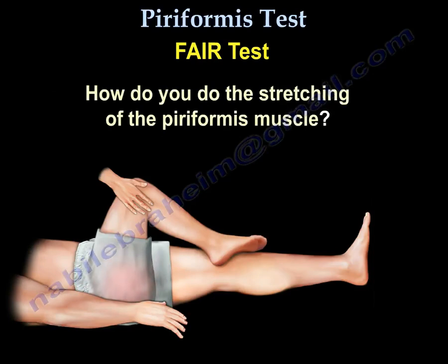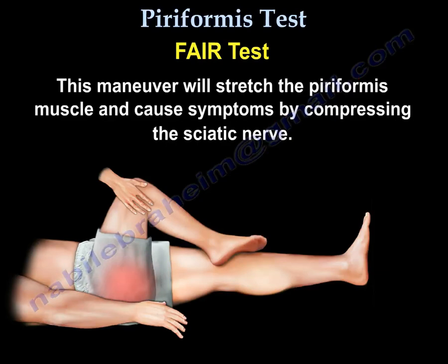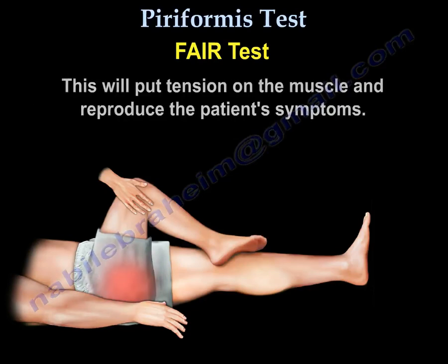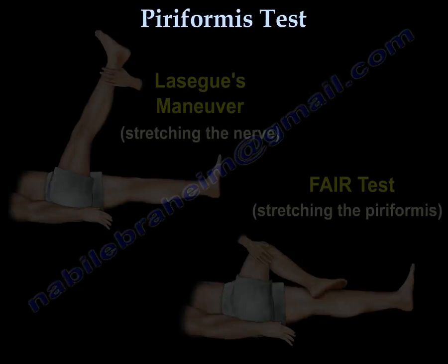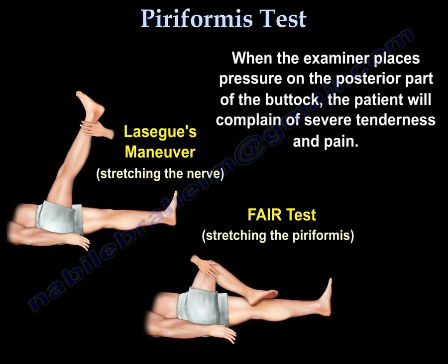To perform the stretching of the piriformis muscle, you flex, adduct, and internally rotate the hip. This maneuver will stretch the piriformis muscle and cause symptoms by compressing the sciatic nerve. It will put tension on the piriformis muscle and reproduce the patient's symptoms. Additionally, when the examiner adds pressure on the posterior part of the buttock during these tests, the patient will complain of severe tenderness and pain.